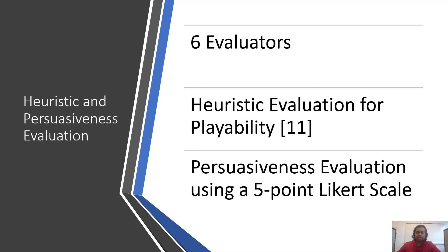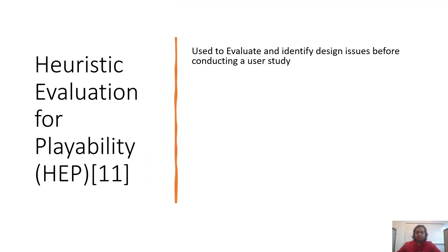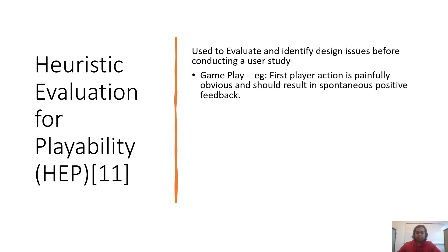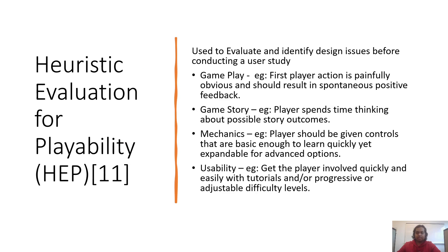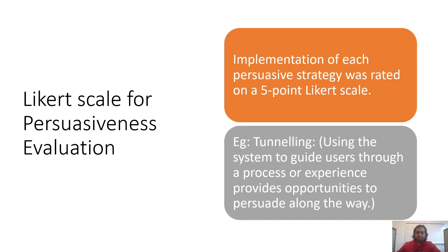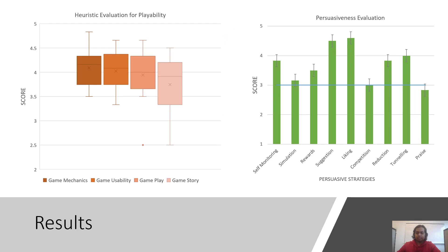We performed heuristic evaluation for playability and persuasiveness evaluation with the help of six persuasive researchers. The heuristic evaluation for playability is used to evaluate the game design and identify any issues during the prototyping stage. Each of the four heuristics shown here has subscales to identify common issues. For measuring persuasiveness, we used a 5-point Likert scale to collect the opinions of evaluators for each implementation of the persuasive strategy. The game mechanics was rated the highest and the game score scored the lowest, but it was still above the neutral score of 3. Liking and selection strategy scored the highest, and praise scored the lowest, possibly because we had only one instance of praise towards the end of the game.